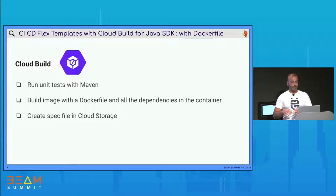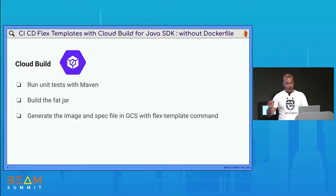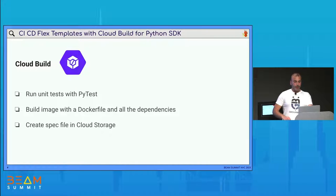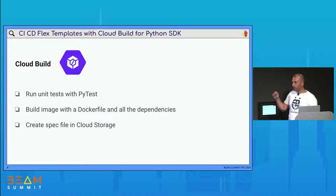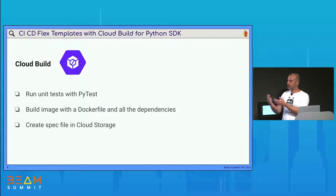To summarize the tools: the first approach uses a Dockerfile with all dependencies installed in the container, runs unit tests with Maven, and creates the spec file in Cloud Storage. The second approach with Cloud Build runs the unit tests, builds the Fat JAR, then generates the spec file and Docker image at the same time with a single command. Then the same use case applies for Python SDK — with Cloud Build we launch unit tests with PyTest. For Python, I decided to use only the Dockerfile approach, because I think it's more adapted to prevent environment issues when launching the job.